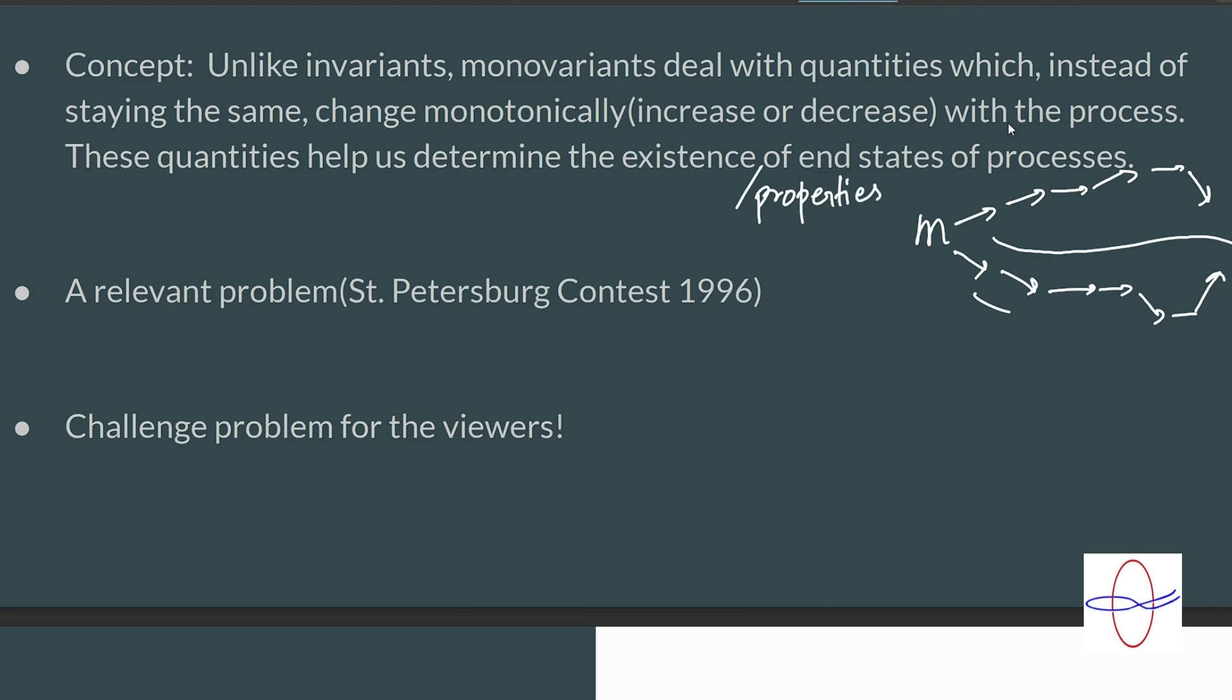How do monovariants help us do this? Well, if we know that with each step of the process, a monovariant just increases, and if we also know beforehand the monovariant is bounded somehow, if we know that there is a bound on the monovariant, clearly the monovariant can't keep on increasing forever, which means that the process also cannot keep on going forever. Same for it moving in the lower direction. So this is how monovariants help us talk about whether a process ends or not.